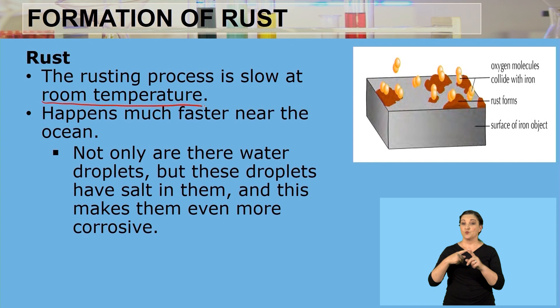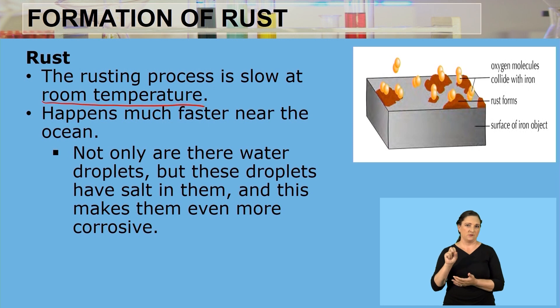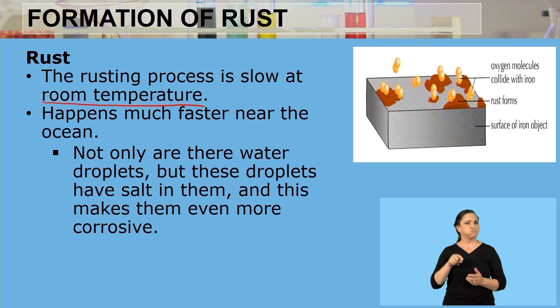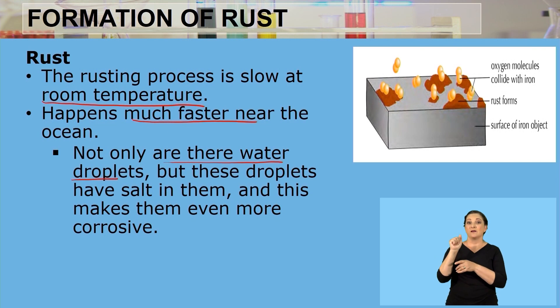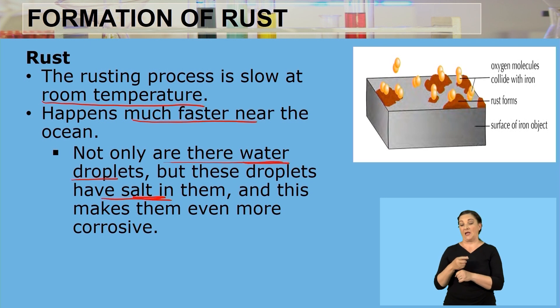The rusting process is very slow at room temperature. However, it happens much faster when the iron is near an ocean. Near the ocean, not only are there water droplets, but those droplets have salt in them. The combination of moisture and salt makes the environment more corrosive, so the substance corrodes faster compared to a substance that is inland.